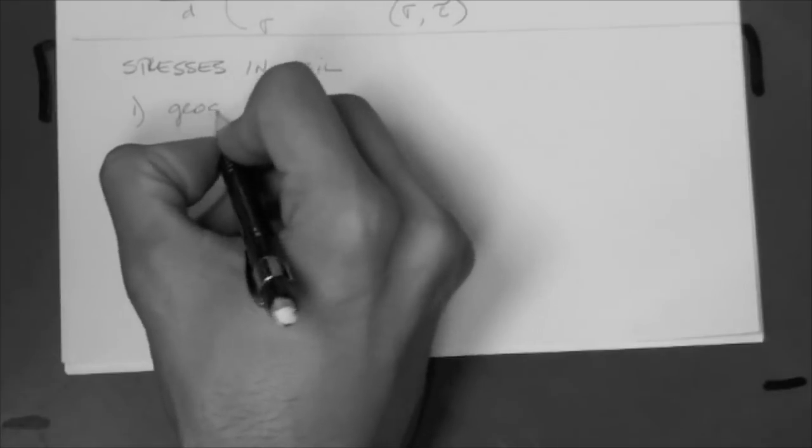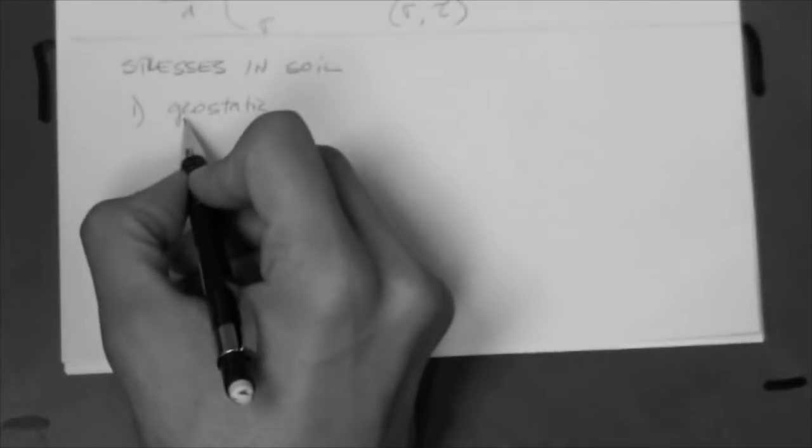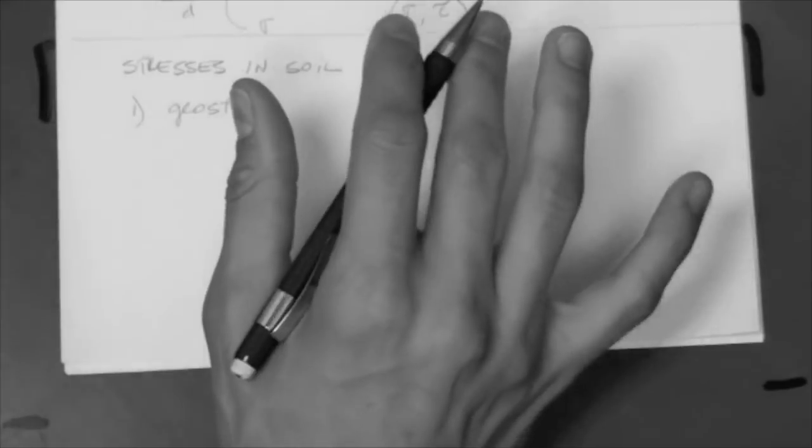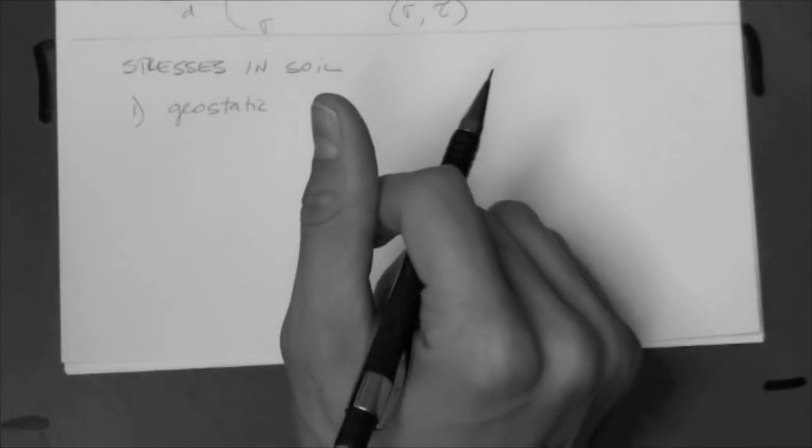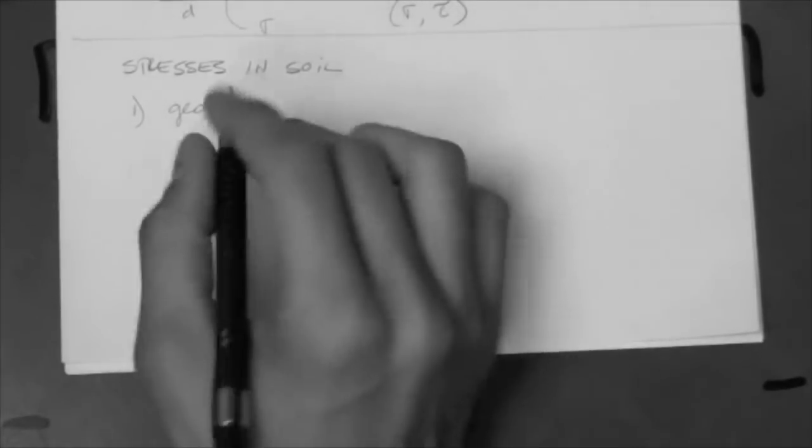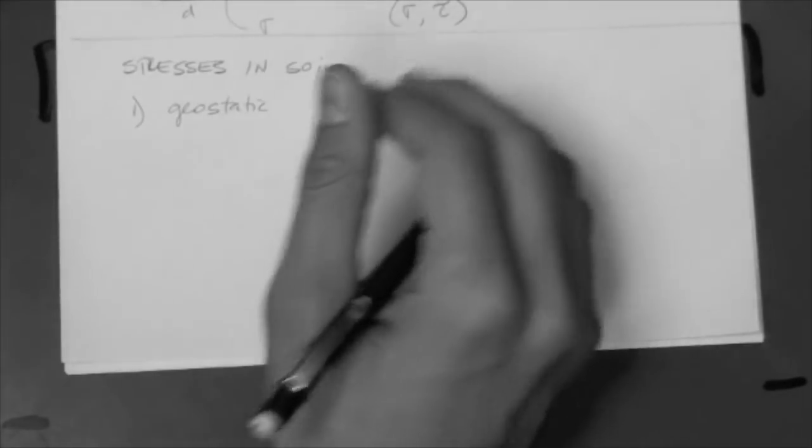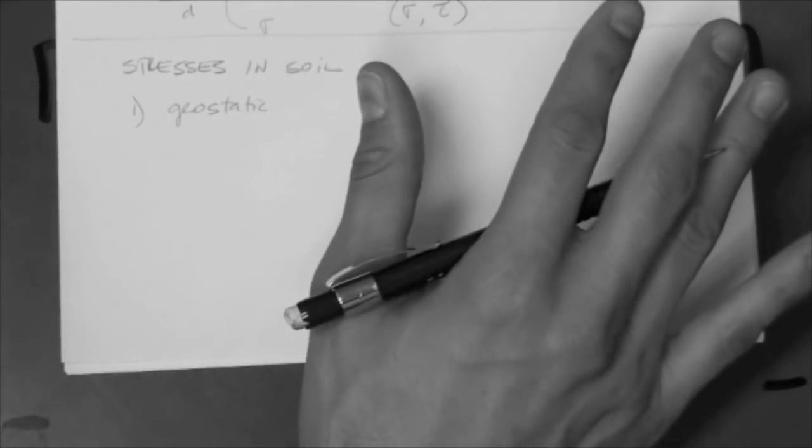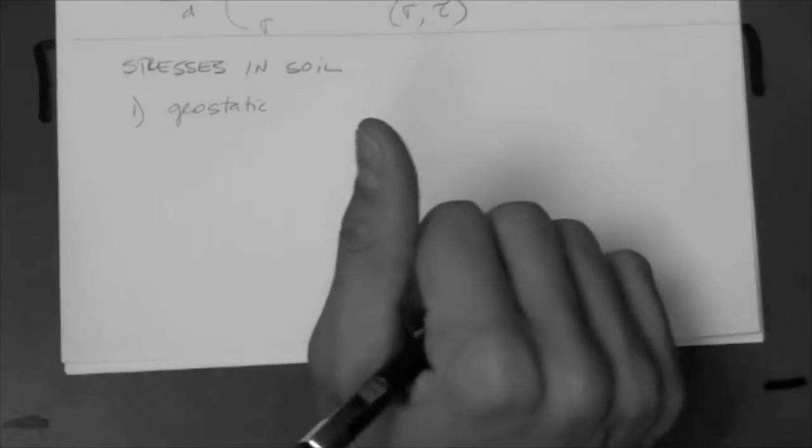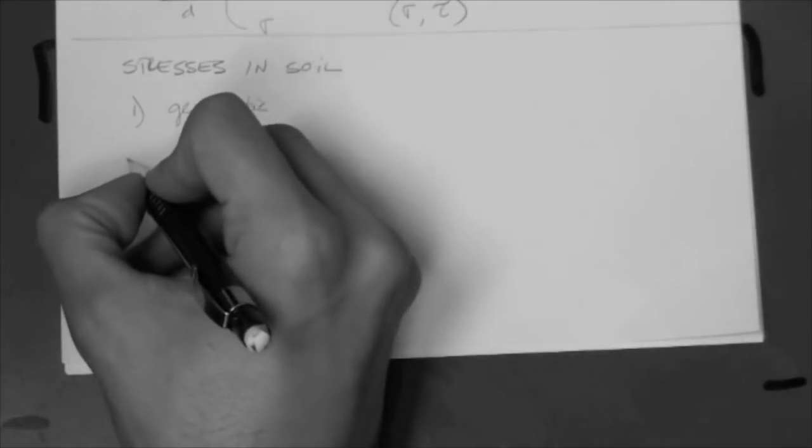The first one is called the geostatic. Geo means soil and static means static. So, basically, what happens here is that there's nothing else happening at the site. We always refer to our location for our project as the site. There's nothing happening at the site, meaning there's no construction, there's no loading, there's no excavations. There's nothing going on other than the soil sitting there by itself with no loads on it, other than its self-weight. It has self-weight. The particles, the fluid, all that has self-weight. That's a geostatic condition.